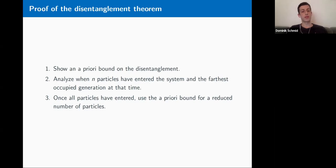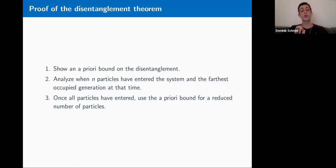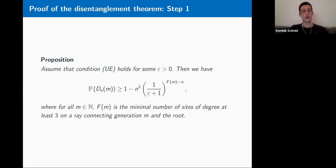The proof of the disentanglement theorem is divided into three steps: first, an a priori bound on disentanglement using a purely combinatorial argument; second, analysis of the time until N particles have entered the system and the farthest generation occupied by some particle at that time; and third, using the a priori bound for a reduced number of particles.